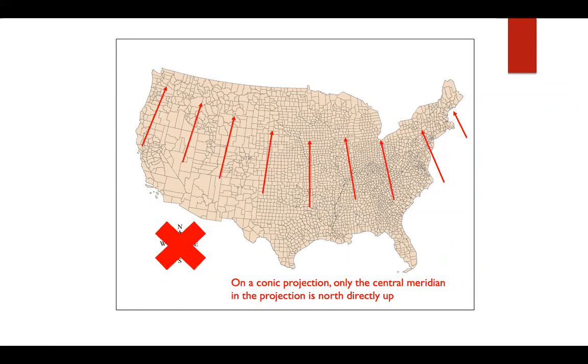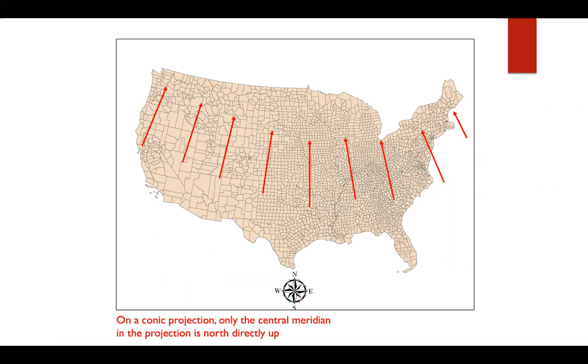On a conic projection, only the central meridian on the projection is North actually up. So if you're desperate to put a North Arrow on your map, and this is your map, you need to put it here, which in my opinion looks pretty stupid.